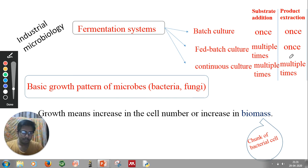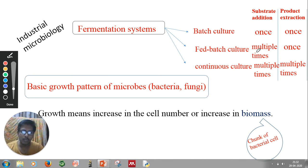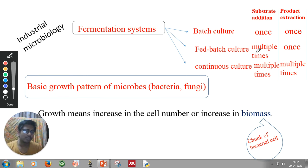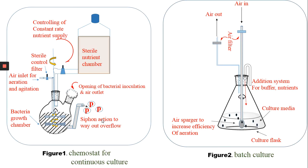For understanding, consider the bacterial growth curve: lag phase, log phase, stationary phase, and death phase. For industrial-scale application, the important phase is the log phase — the exponential phase. We want to enlarge the time scale of the log phase. In batch culture, nutrients are given once and the product is extracted once. In continuous culture, nutrients are supplied and product is extracted continuously, which is the key uniqueness we will discuss.